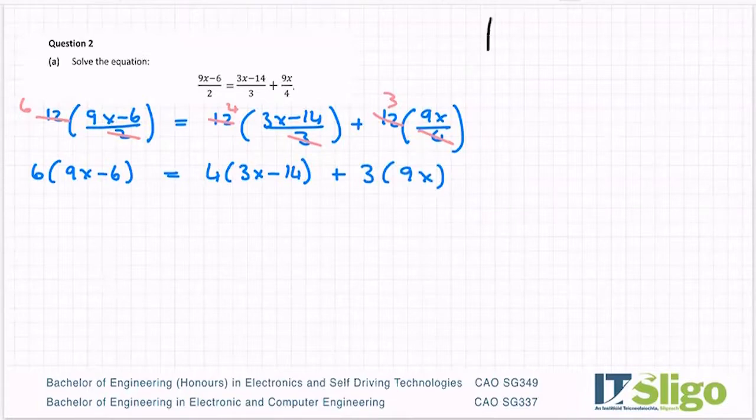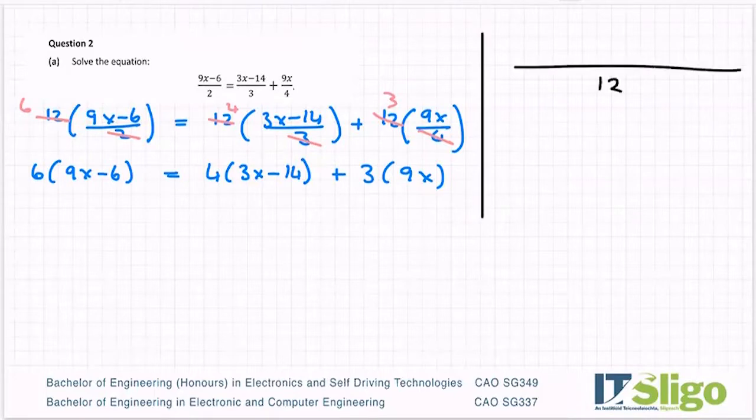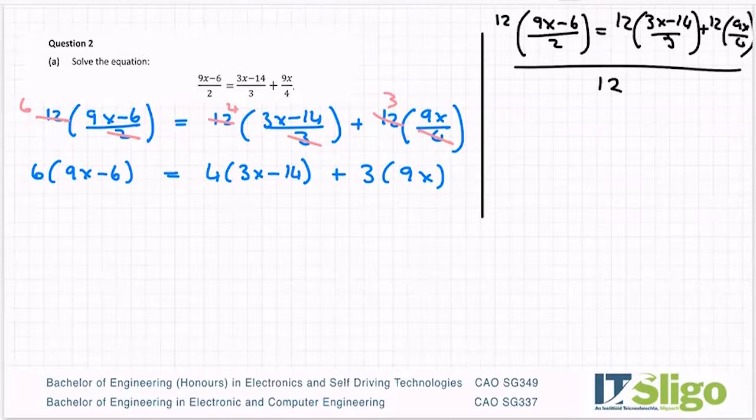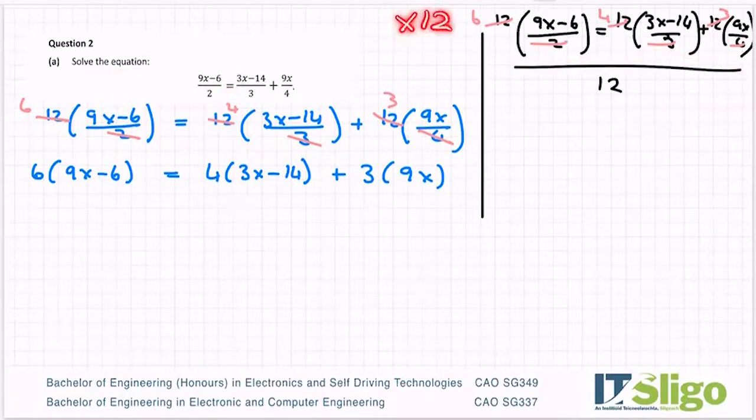It is the very same thinking, just in case I've confused anybody, it is the very same thinking as a common denominator. So my common denominator is 12. So you can do 12 times 9x minus 6 over 2 equals 12 times 3x minus 14 over 3 plus 12 times 9x over 4. And you can see now how these start to cancel the same way again. So that you end up with this line here. I just don't have the over 12 in my one, simply because it's a solve and there's an equals in the middle. So you're going to end up dropping the bottom line anyway.